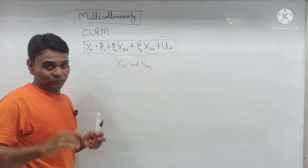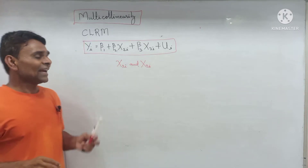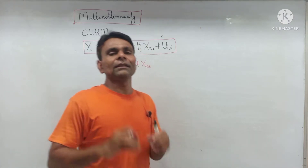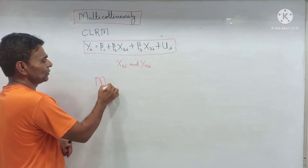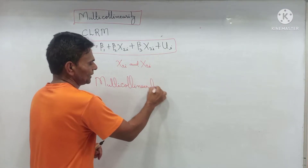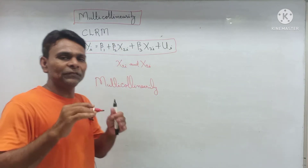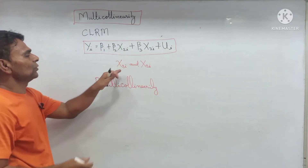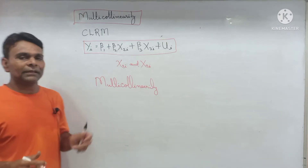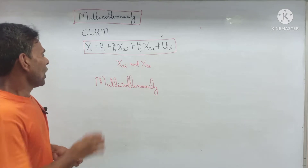According to the classical linear regression model, there is no correlation between the two explanatory variables X2 and X3. So the CLRM assumes there is no multicollinearity problem. But now, what is the multicollinearity problem? When it violates the assumption of CLRM — that there is no correlation between X2 and X3 — multicollinearity indicates the presence of high correlation between explanatory variables. There is high correlation between X2i and X3i; that is called the problem of multicollinearity.